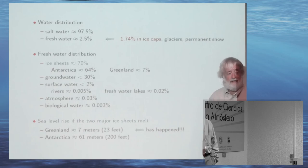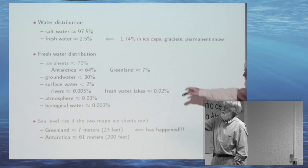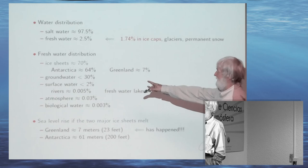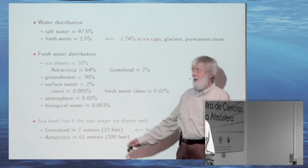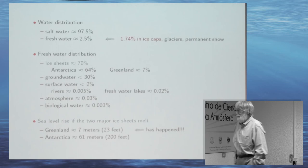Of this 2.5%, 70% is in Antarctica — the ice in Antarctica and Greenland. Groundwater — the rest is in subsurface water. Surface water is very little. Rivers have almost nothing, lakes have almost nothing, the atmosphere has almost nothing, and all flora and fauna together have even less than that — practically nothing.